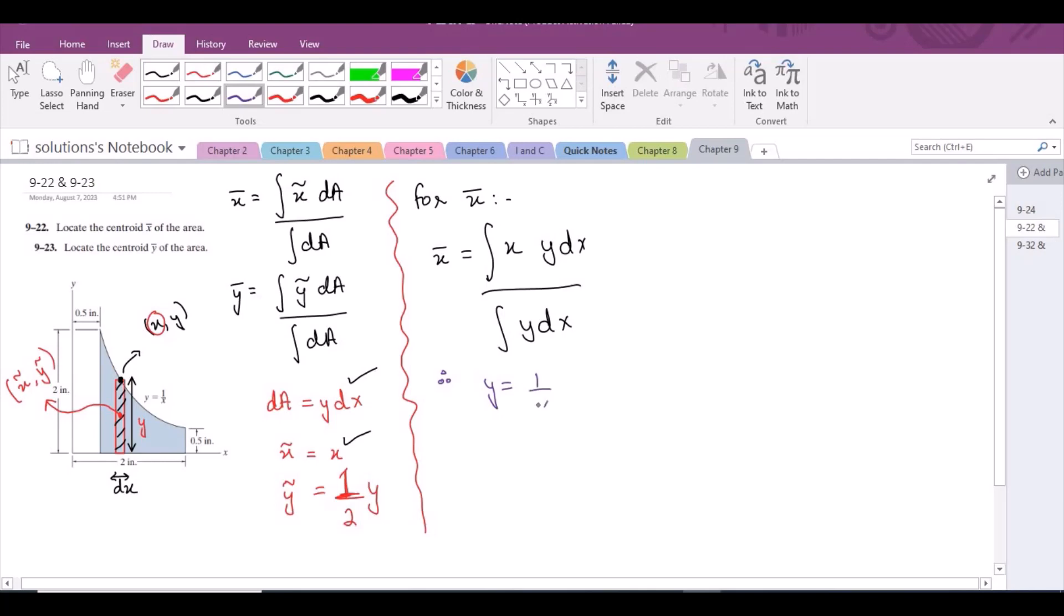Now we know that y equals 1 upon x. It is provided to us in the problem. So x bar equals integral x multiplied by 1 upon x dx divided by 1 upon x dx. This x and that x cancel out. Now for the limits of x, if we consider the figure, the region varies from x equals 0.5 to 2. So the limits of x are from 2 to 0.5.